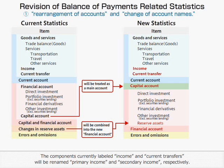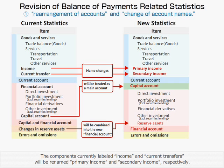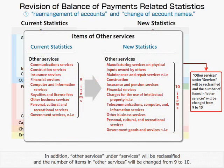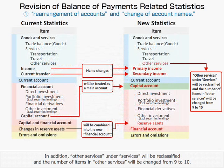The components currently labeled Income and Current Transfers will be renamed Primary Income and Secondary Income, respectively. In addition, Other Services under Services will be reclassified and the number of items in Other Services will be changed from 9 to 10.